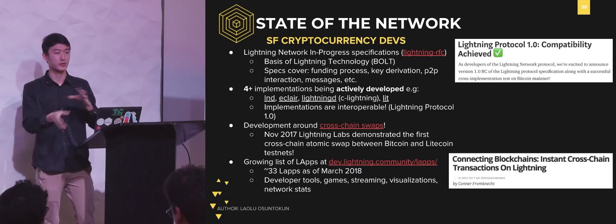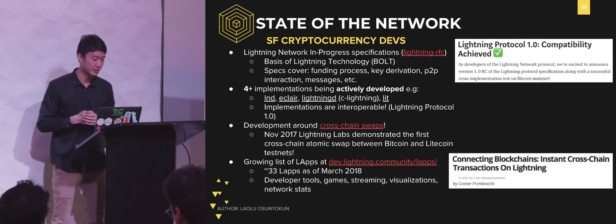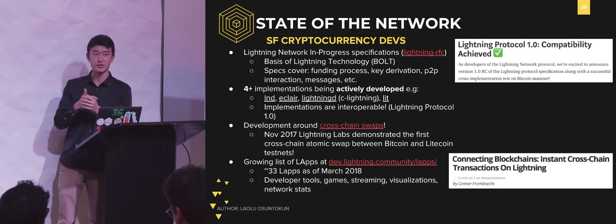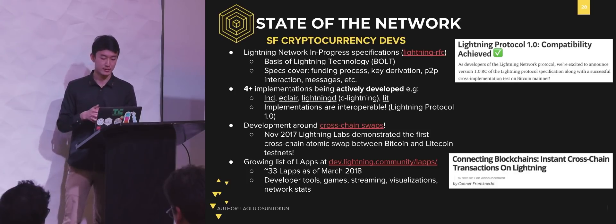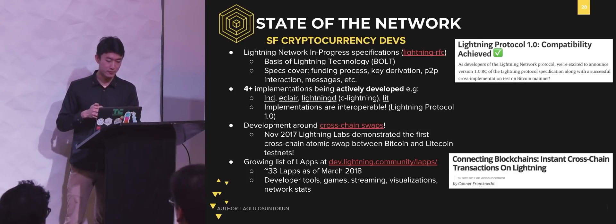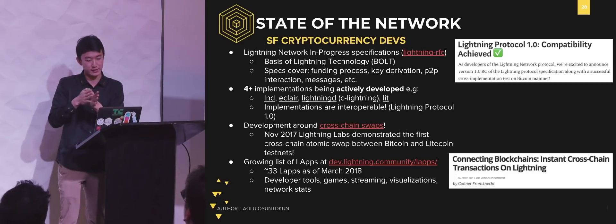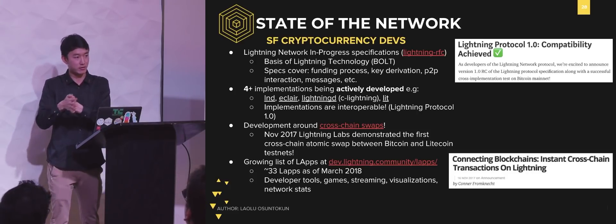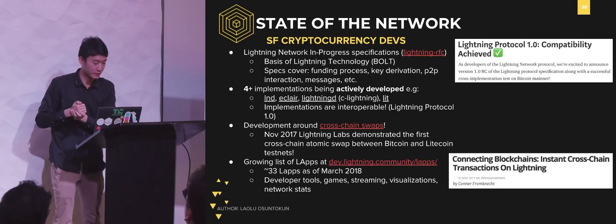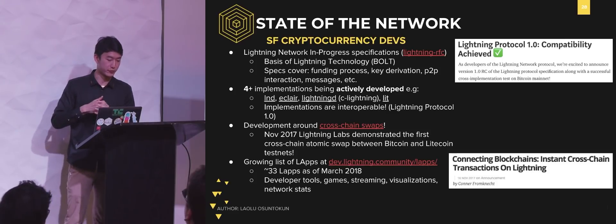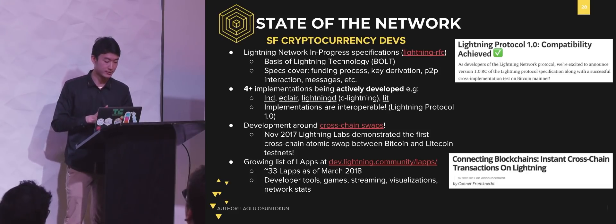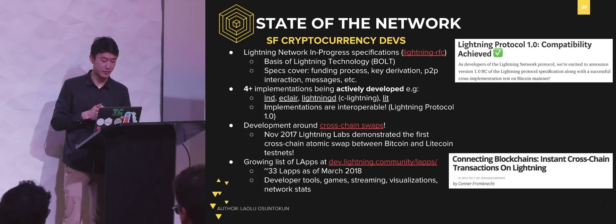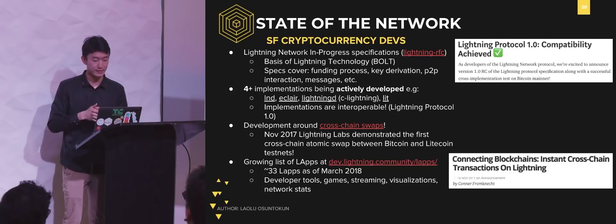As for the Lightning Network itself: the specification for the Lightning protocol is still in progress. If you want to find all the nitty-gritty details, you can read through the specification. There are about four implementations being developed. Here at Lightning Labs, we're building LND, which is the Go implementation. There's also Eclair, which is Scala; there's C-Lightning; and there's Lit. As of pretty recently, we made all these implementations interoperable — so as an LND node, you can now pay Eclair nodes, et cetera.